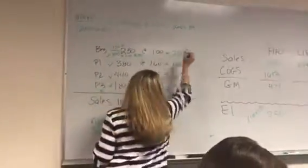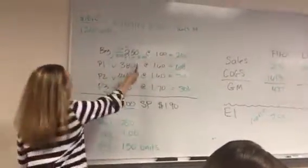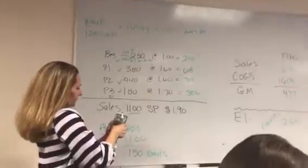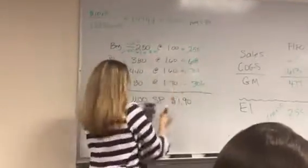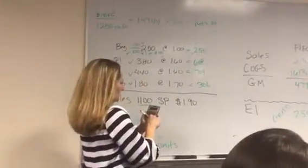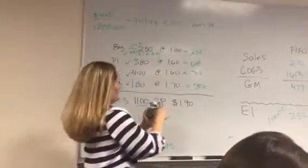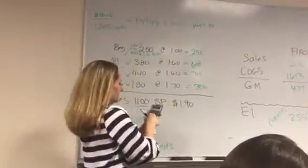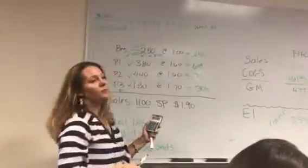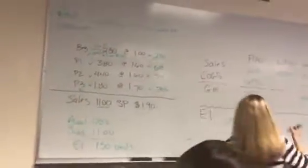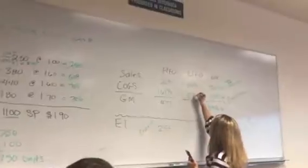So $100 plus $608 plus $704 plus $306 for a total of $1,718.